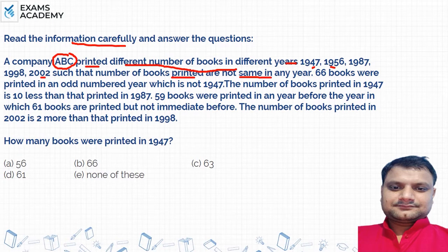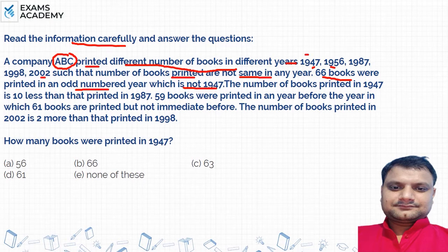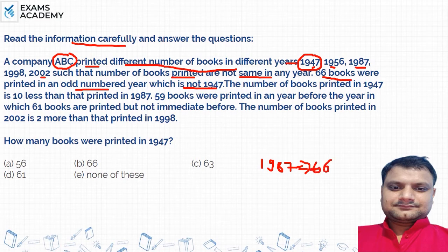Now, 66 books were printed in an odd-numbered year which is not 1947. So I have two odd years: 1947 and 1987. Since it is not 1947, it must automatically be 1987. So how many books were printed in 1987? 66. Because this is given — it is not in 1947.